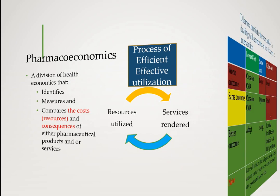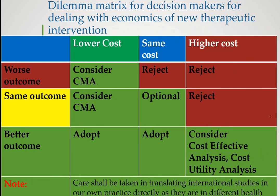As we said in the previous lecture, there is a dilemma matrix. If the cost of the alternative therapy is lower, you plot the cost of the therapy on the x-axis versus the outcome on the y-axis. The outcome may be worse, the outcome may be the same, and the outcome may be better.